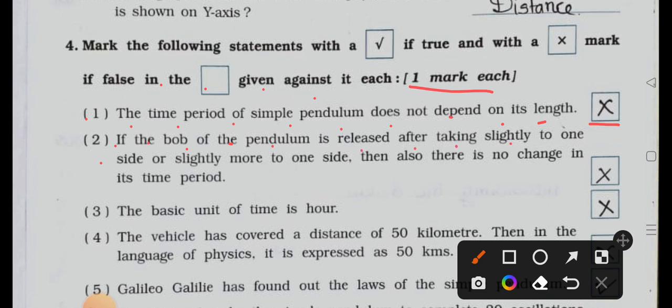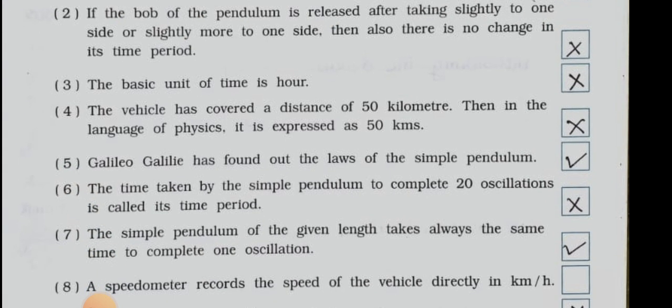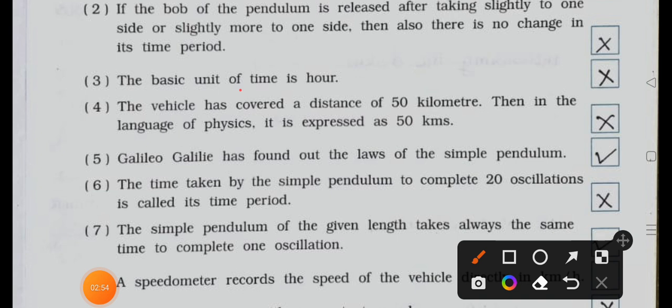Number two: if the bob of the pendulum is released after taking slightly to one side or slightly more to one side, then also there is no change in its time period. Answer is wrong, false.